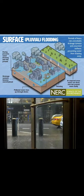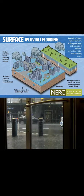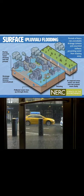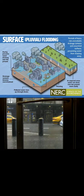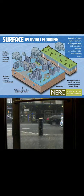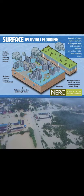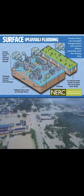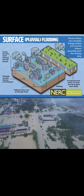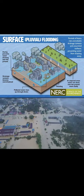Number two: surface or pluvial flooding. Pluvial flooding refers to flooding that occurs as a result of excessive rainfall rather than from rivers or streams. It can happen in urban areas where the ground is covered by hard surfaces such as roads and buildings, which can cause rainwater to run off quickly into low-lying areas.